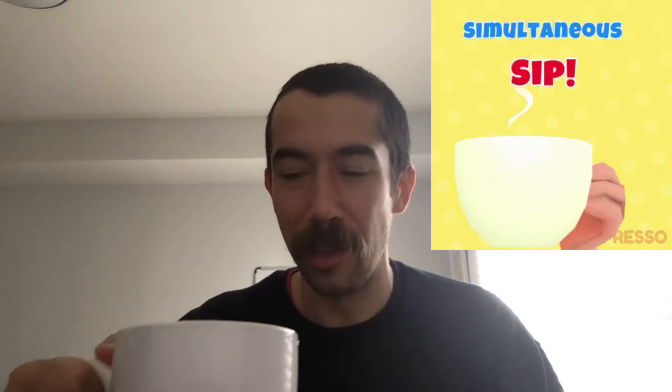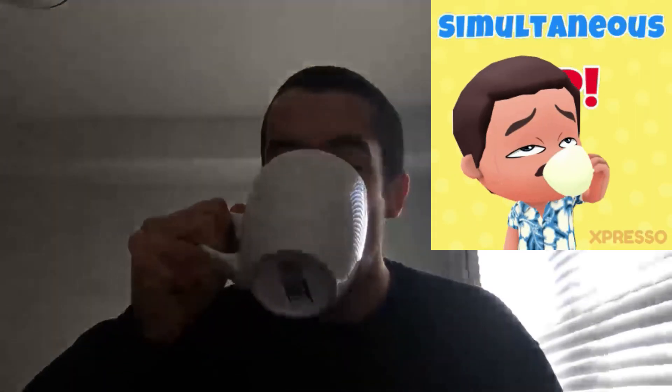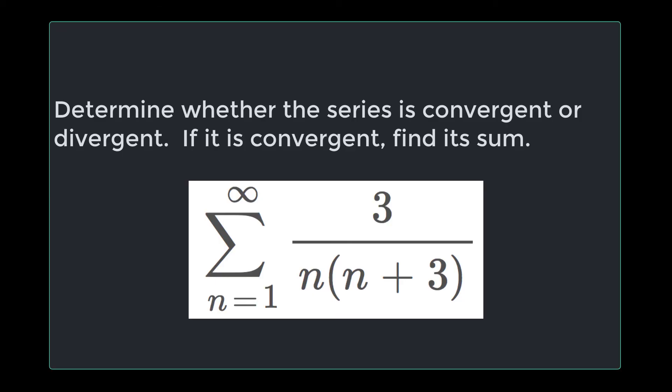If you're ready to do math today and you have your coffee ready, join me in the Simultaneous Sip. The question we're working on today is: determine whether the series is convergent or divergent. If it's convergent, find its sum. The series is the sum from n equals 1 to infinity of 3 over n times n plus 3.